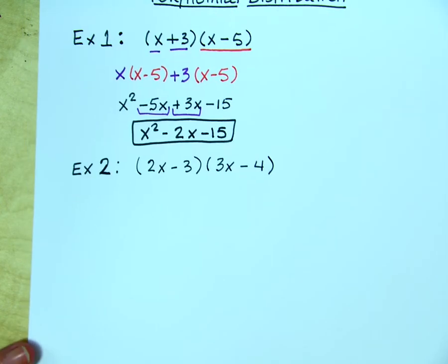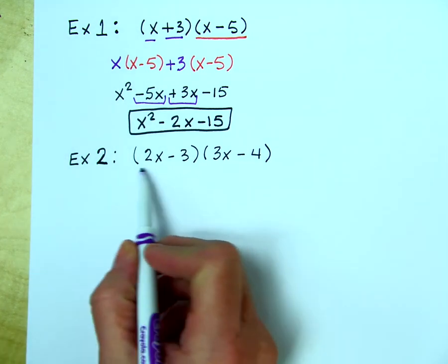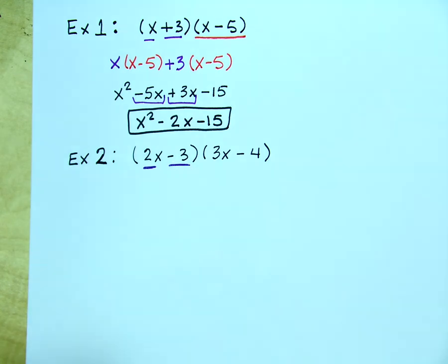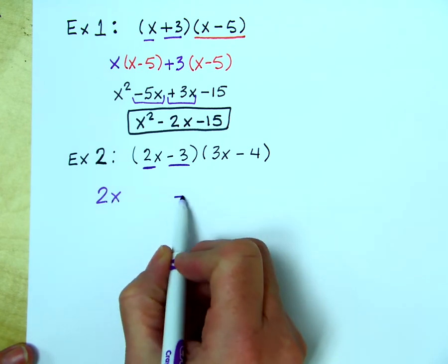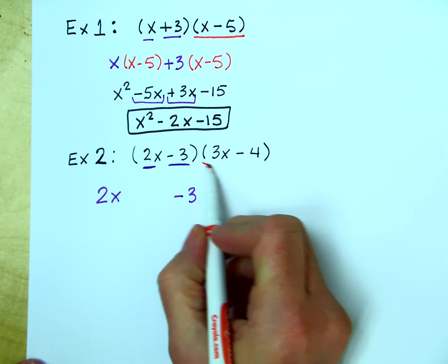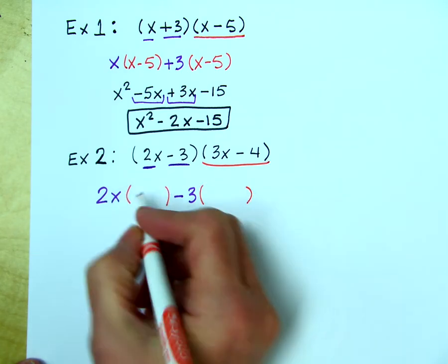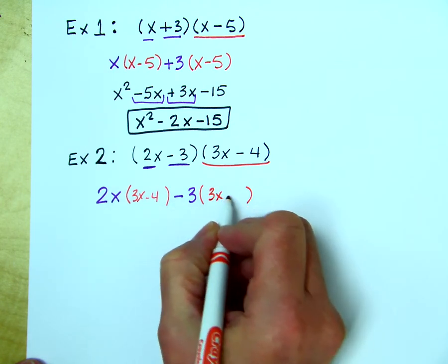Now what if we have something that looks like it might be a little more complicated? We have the same situation, a binomial times a binomial. We simply take the two terms from the first binomial, write them down, and then take the second binomial and multiply it by each of those terms. So we have 3x minus 4, 3x minus 4. Now we distribute.